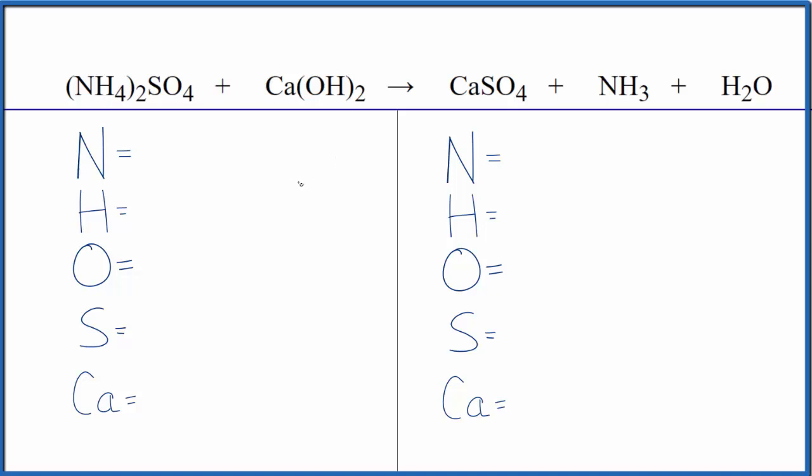Let's first count the atoms up and balance the equation. For nitrogen, we have one here but two times everything, so two times one gives us two nitrogen atoms. Two times four gives us eight hydrogens, but two times this one we get two more here for a total of ten hydrogen atoms.